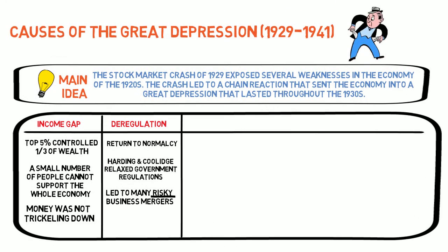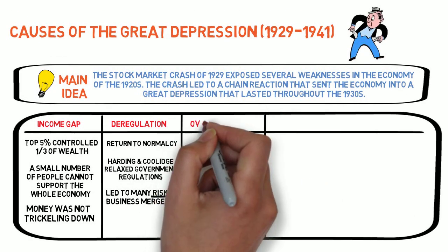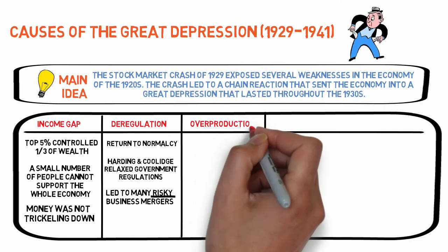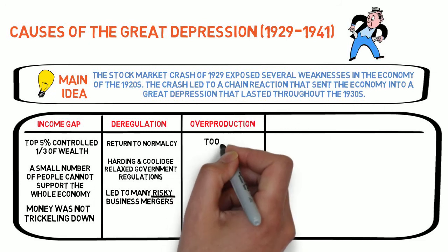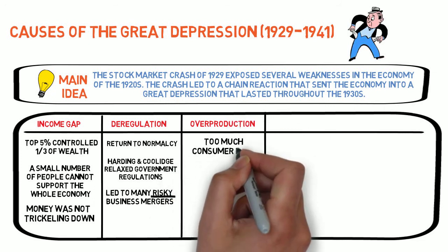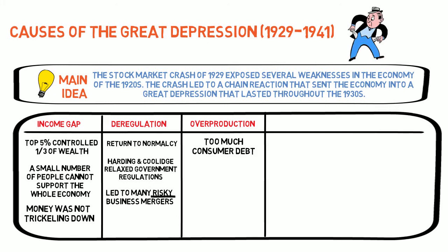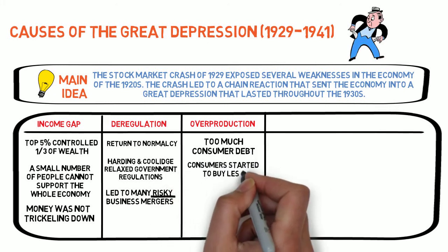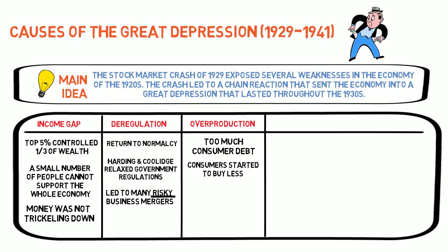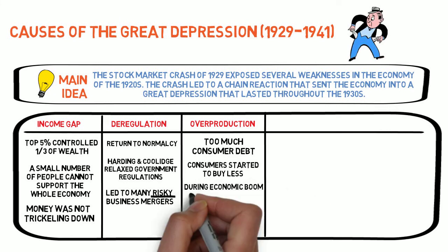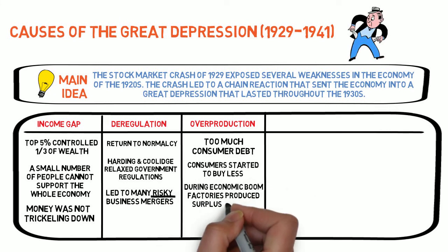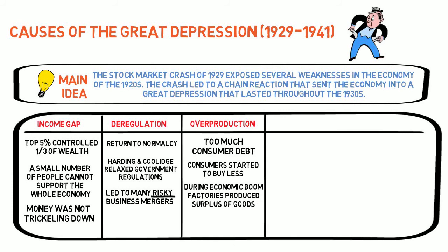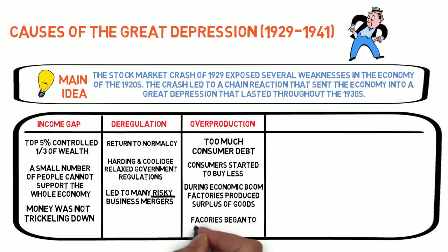Another problem with the 1920s economy was that goods were overproduced. During the 1920s, demand was high because many people were buying products on credit, which led to a large amount of consumer debt. To meet the demand, companies produced more and more. Once consumers began to cut back on spending, however, demand dried up. Now companies had a surplus of goods, which led them to cut back on their production, and that leads to layoffs.